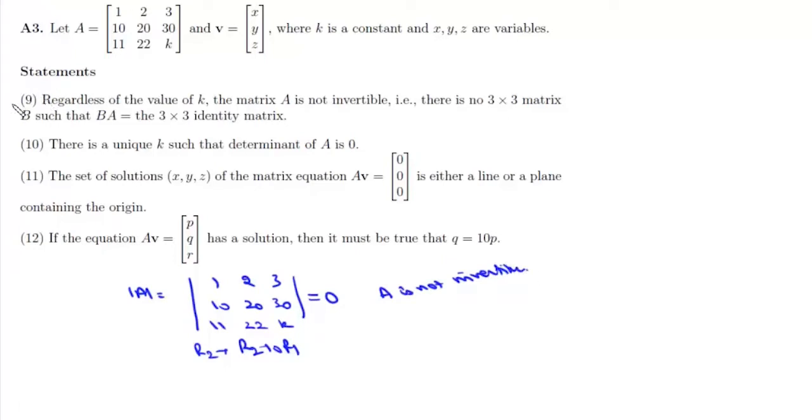Statement 9 is correct. Statement 10 says there is a unique k such that the determinant of A is 0. However, the determinant of A is 0 regardless of the value of k. Since k can take infinitely many values, statement 10 is incorrect.